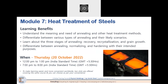The seventh module is on Heat Treatment of Steels. The learning benefits include understanding the meaning and need of annealing and other heat treatment methods, and differentiating between various types of annealing and their likely scenarios. Learners will understand what actually happens during annealing and why the three stages — recovery, recrystallization and grain growth — occur in a material and what they do to the material and its applications. We will also talk about different treatments like annealing, normalizing and hardening, and when they are intended to be used. This is on 20 October, 12 p.m. to 1 p.m. and 7 p.m. to 8 p.m.